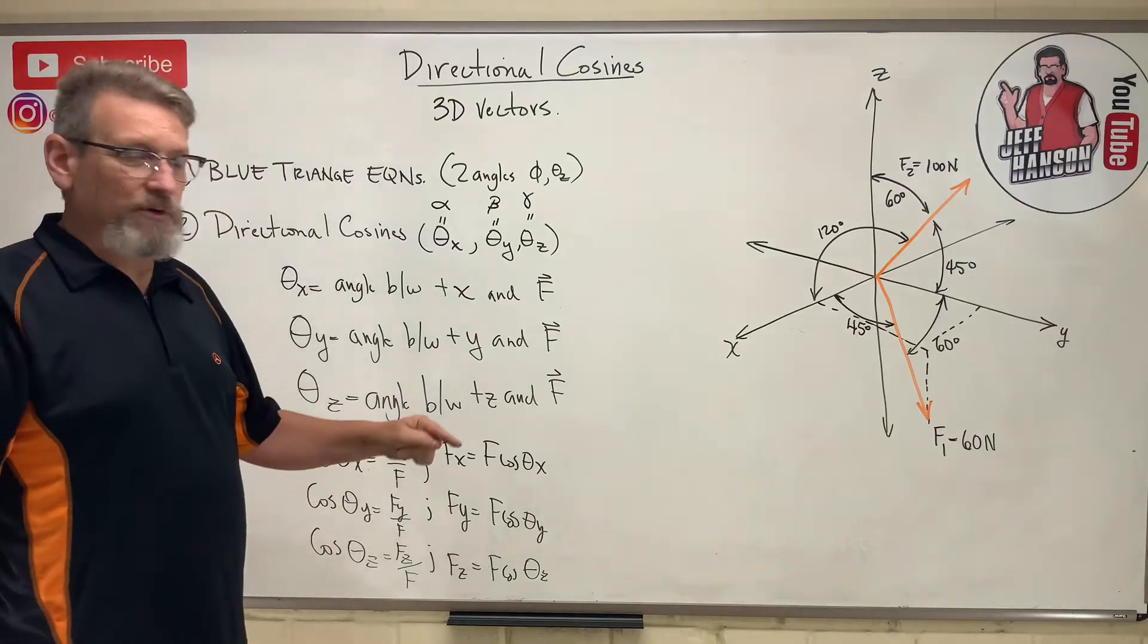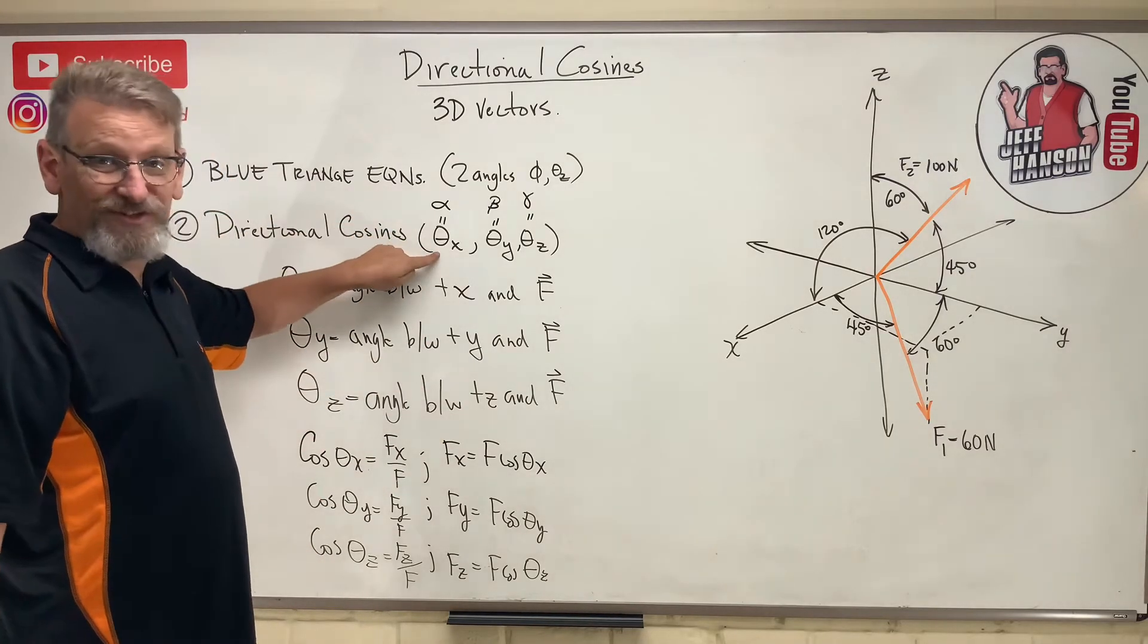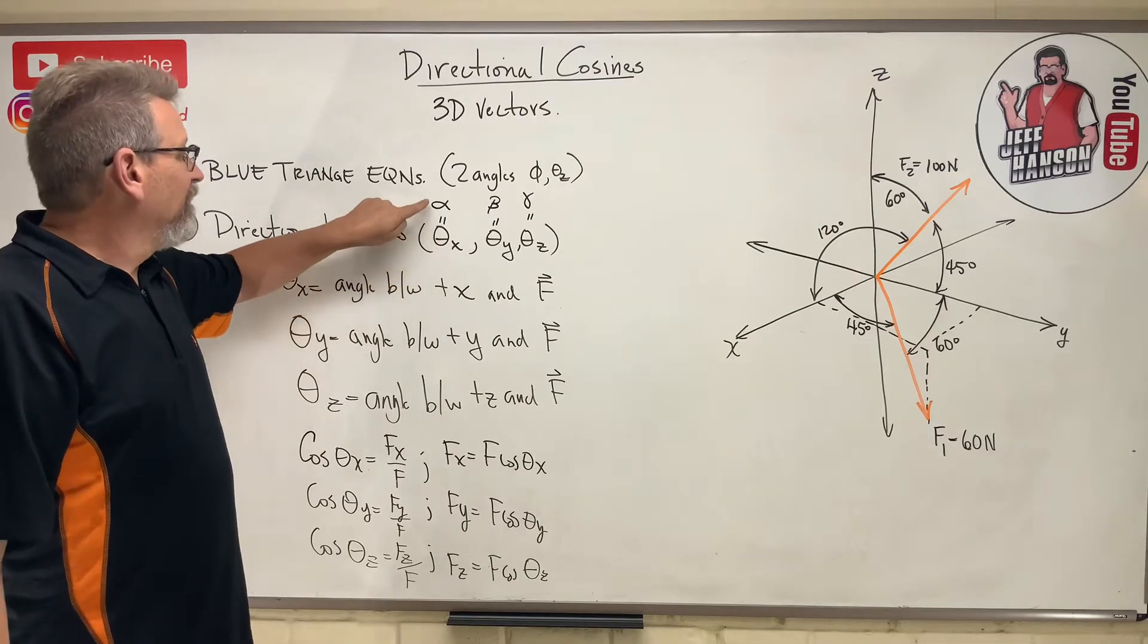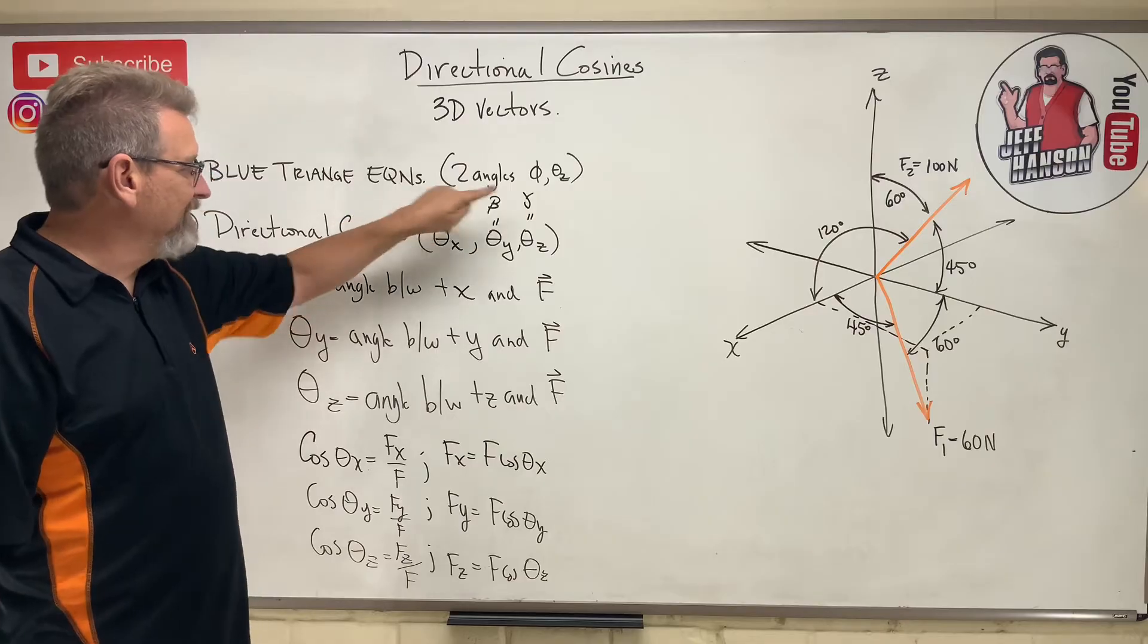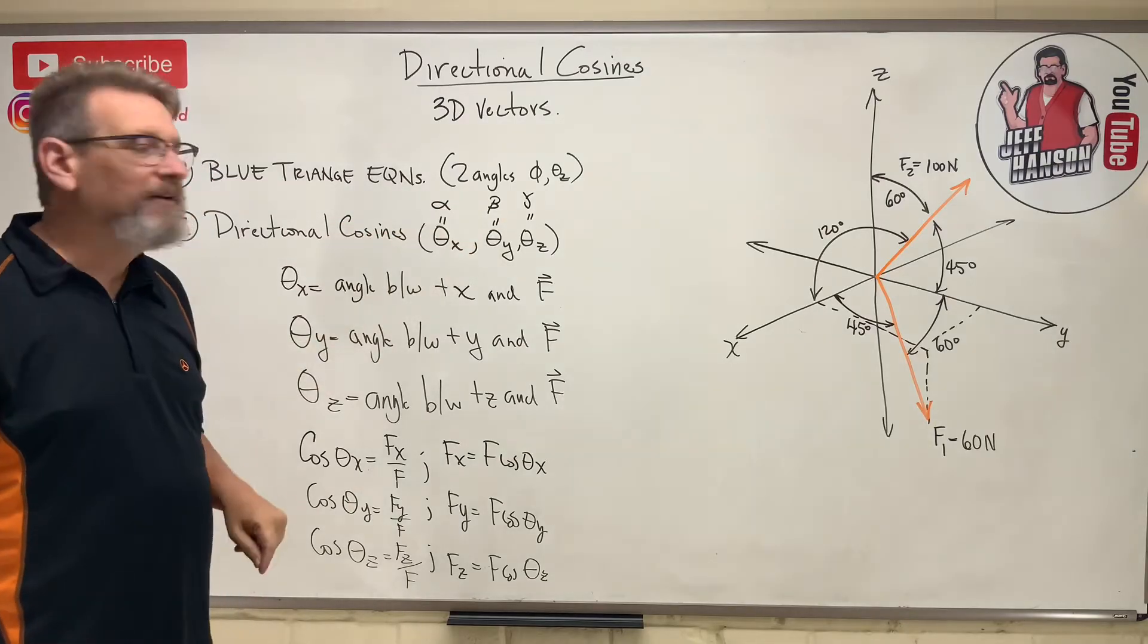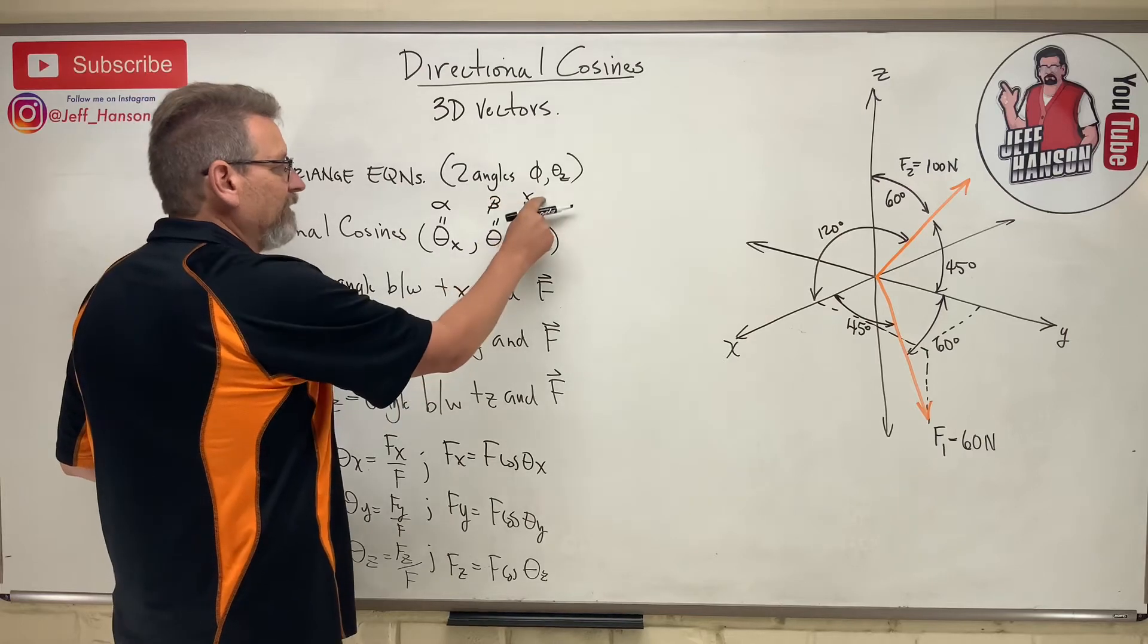So if you have your secret decoder ring, anytime you see alpha in the book, just think that's just theta x. What's the first three letters of the Greek alphabet? Alpha, beta, gamma. A, B, C. X, Y, Z, right? This alpha is theta x, beta is theta y, gamma is theta z.